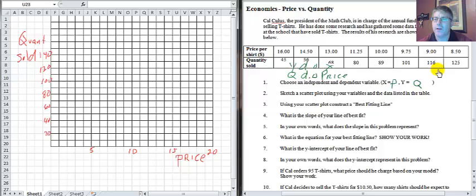Now we need to plot our ordered pairs. At eight and a half dollars we sell a hundred and twenty five shirts, that's a point right about there. At nine dollars a hundred and sixteen shirts, a little bit less, right about there. Nine dollars and seventy five cents, a hundred and one shirts, just under ten dollars right about there.